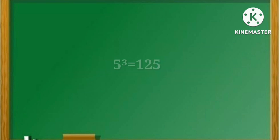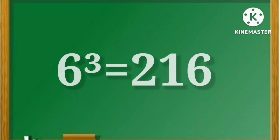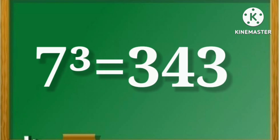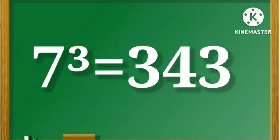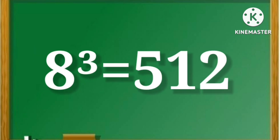5 cube is equal to 125. 6 cube is equal to 216. 7 cube is equal to 343. 8 cube is equal to 512.